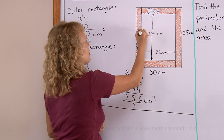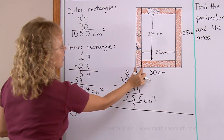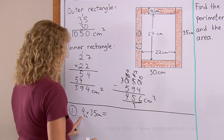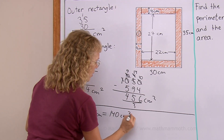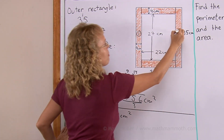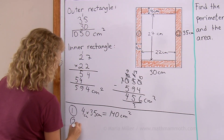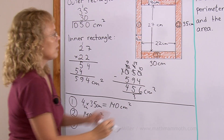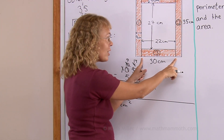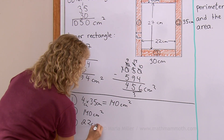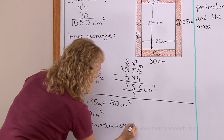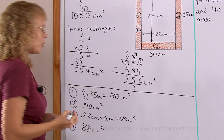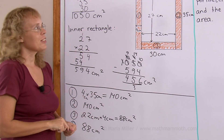Rectangle number one would be 4 centimeters times 35, which is the same as 2 times 70, so 140 square centimeters. Rectangle number two is the same, also 140 square centimeters. Then this rectangle here would be 22 times 4 — that is 22 centimeters times 4 centimeters — which is 88 square centimeters. The last rectangle is of course the same, also 88 square centimeters. Now you add those four and you get the same 456 square centimeters.